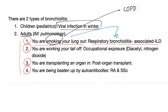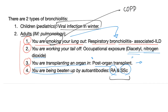Or you could be working your tail off — occupational exposure to materials such as diacetyl or nitrogen dioxide. You are transplanting an organ in — post-organ transplant, you can have a restrictive lung disease. You are being beaten up by autoantibodies such as in rheumatoid arthritis and scleroderma, both autoimmune diseases. So bronchiolitis could happen in children — talk to your pediatrician — or in adults, where you should seek an internal medicine doctor, especially a pulmonologist.